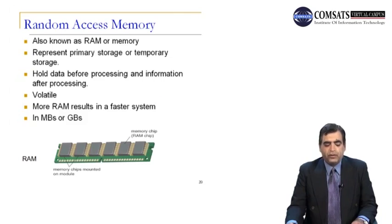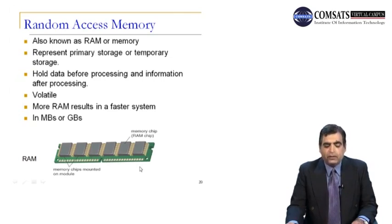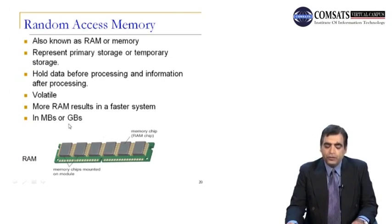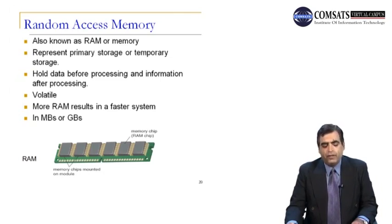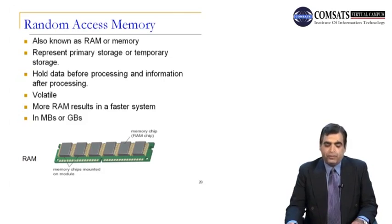Data is both written to and read from memory. Because of this, RAM is sometimes called read-write memory. RAM is made of a set of chips mounted on a small circuit board — these are the memory chips. RAM is volatile, meaning it loses its contents when the computer is shut off or if there is a power failure. Therefore RAM needs a constant supply of power to hold its data. For this reason, you should save your data files to a storage device frequently to avoid losing them in case of a power failure. RAM has a tremendous impact on the speed and power of a computer — generally, more RAM results in a faster system.